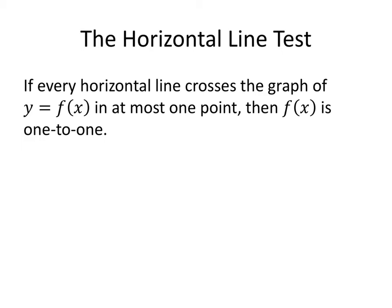So that means that it's okay for a horizontal line to cross your function once. In fact, it's okay for a horizontal line to never cross the graph of your function. But if the horizontal line crosses the graph more than once, then your function is not one-to-one.